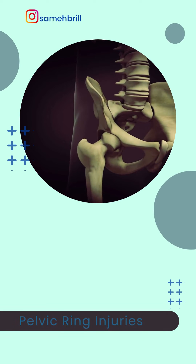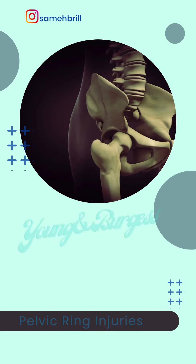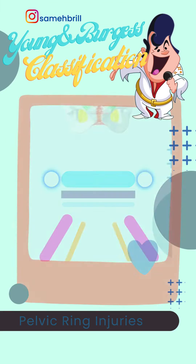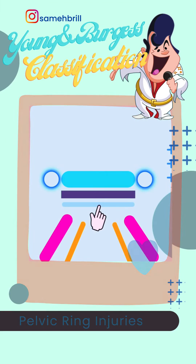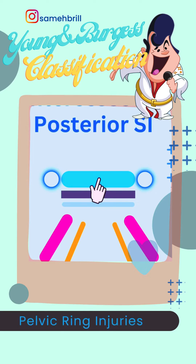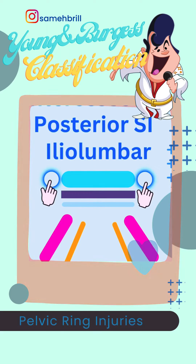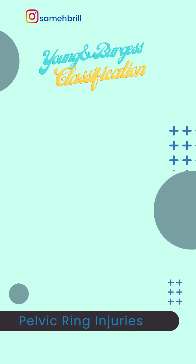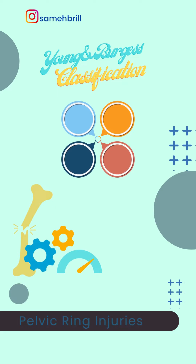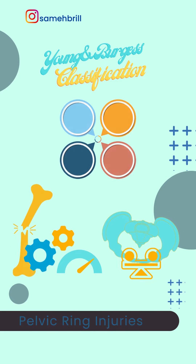Welcome back. Today we'll be discussing the Young & Burgess classification of pelvic fractures. If you have not seen my previous reel on applied anatomy of the pelvic ring, I highly recommend watching it, as it will make this classification easier to remember. In the Young & Burgess classification, there are four types of pelvic fractures, according to the mechanism of injury and stability of the pelvic ring.